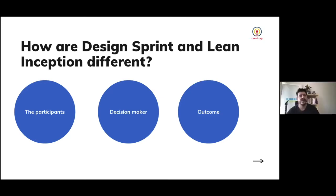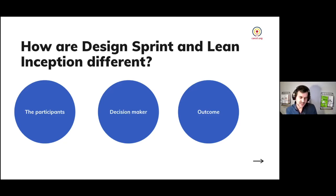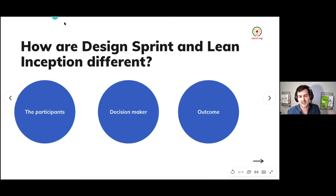Another huge difference is the outcome. Design Sprint, as mentioned, produces a prototype that you test — you put something in front of real users. On Lean Inception, the outcome is the MVP plan. You leave with a plan for the MVP. They're very different outcomes: with a prototype, you select a few users and they touch it. With Inception, you don't put anything in front of anyone because you still don't even have an interface — you have a plan for the MVP and that's it.